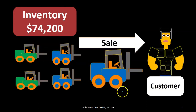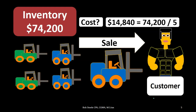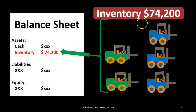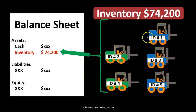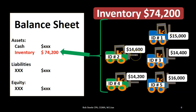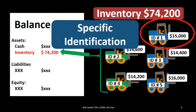We might divide the total $74,200 by five and say one forklift is worth $14,840 — that's one averaging method. Alternatively, we could assign identification numbers: ID number one, two, and so forth, allowing us to assign specific dollar amounts. Number one cost $15,000, number two cost $14,600, number three cost $14,400. We're going to specifically track and identify each item by its actual cost — this is called specific identification.